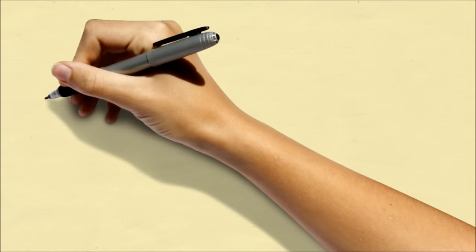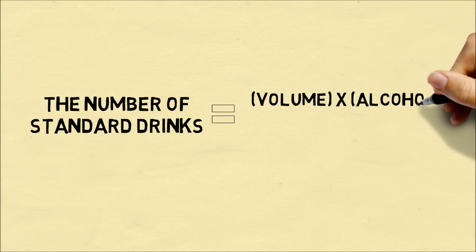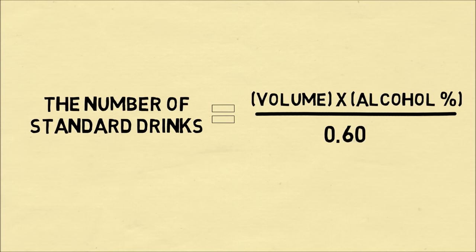So if you want to keep track of the number of drinks you're having in a night, you can follow this formula. The number of standard drinks will be equal to the volume times the alcohol percentage, divided by 0.6. The numerator tells you how much alcohol is in your drink, and the denominator standardizes this to one drink equivalent.